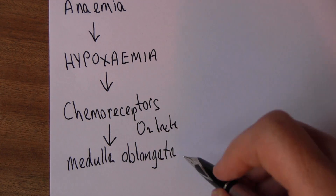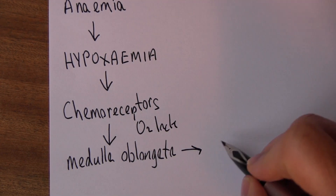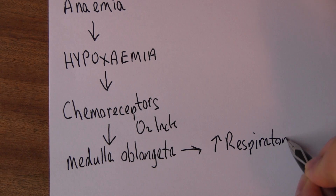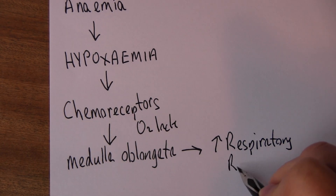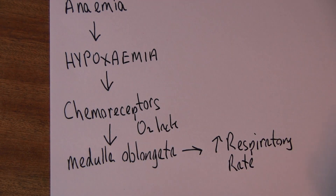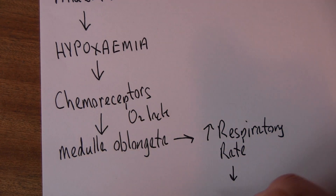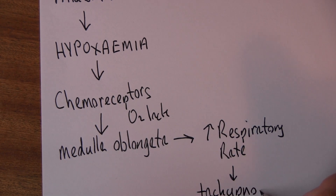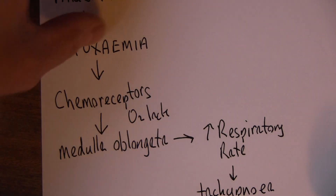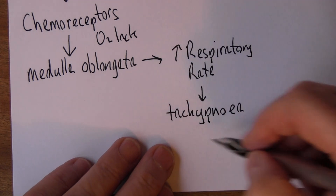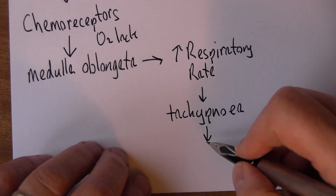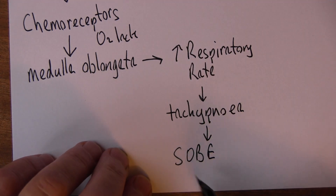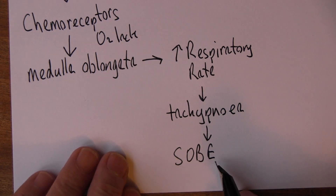The chemoreceptors send messages to the brainstem — the medulla oblongata, the lower part of the brainstem which contains the cardiac center, the vasomotor center, and the respiratory center. When these chemoreceptors detect oxygen lack in the blood, the medulla oblongata responds by increasing respiratory rate and depth of ventilation — in other words, what we call tachypnea. The respiratory rate increases even at rest and is particularly increased during exertion, so there'll be shortness of breath on exertion (SOBE).